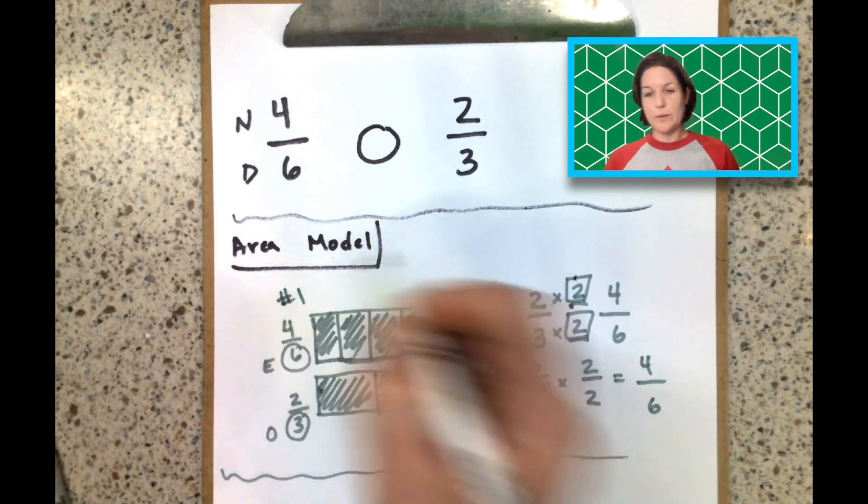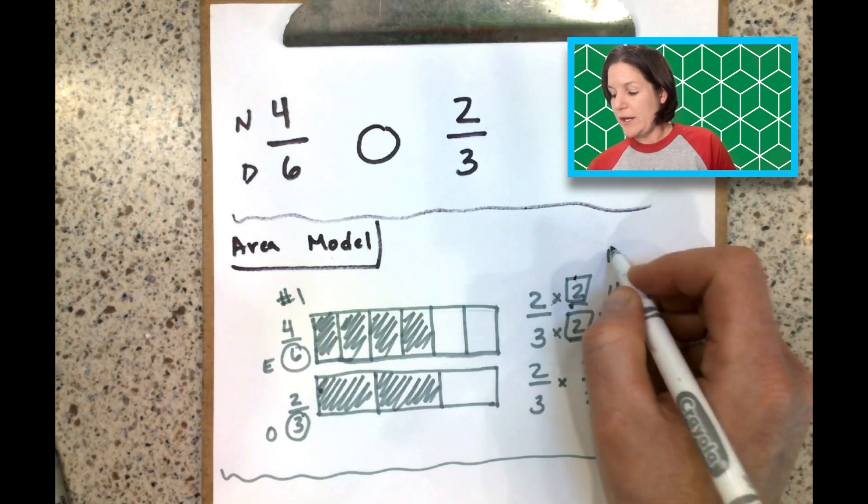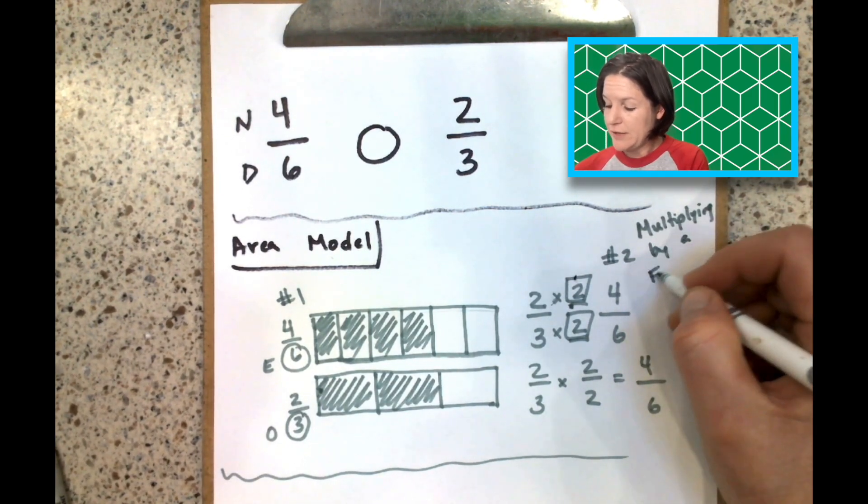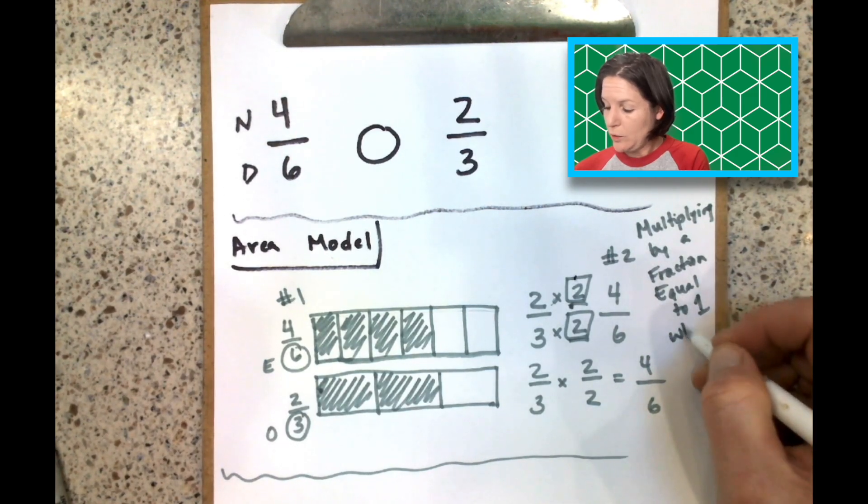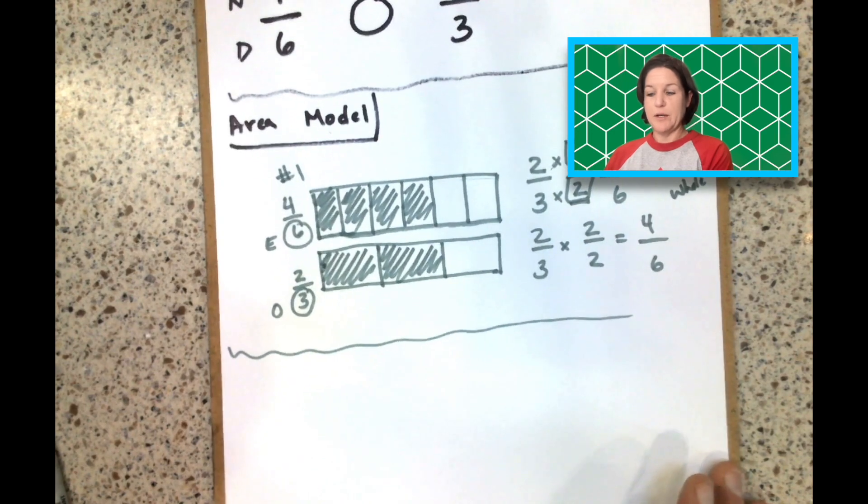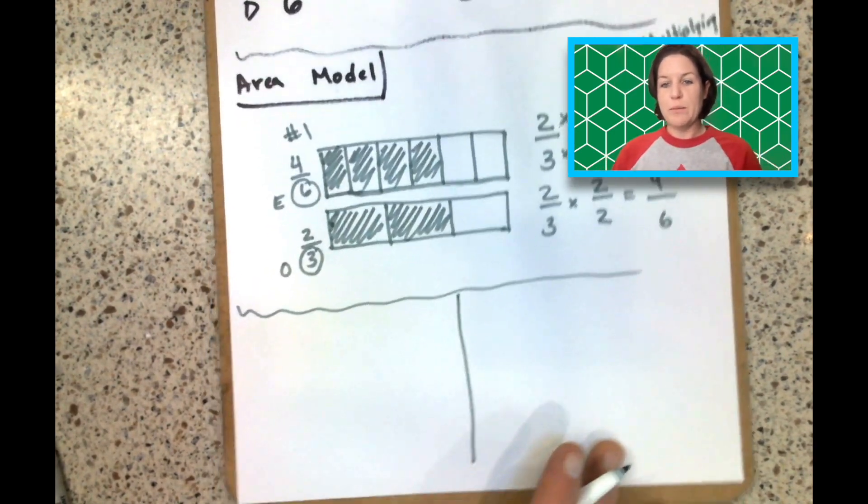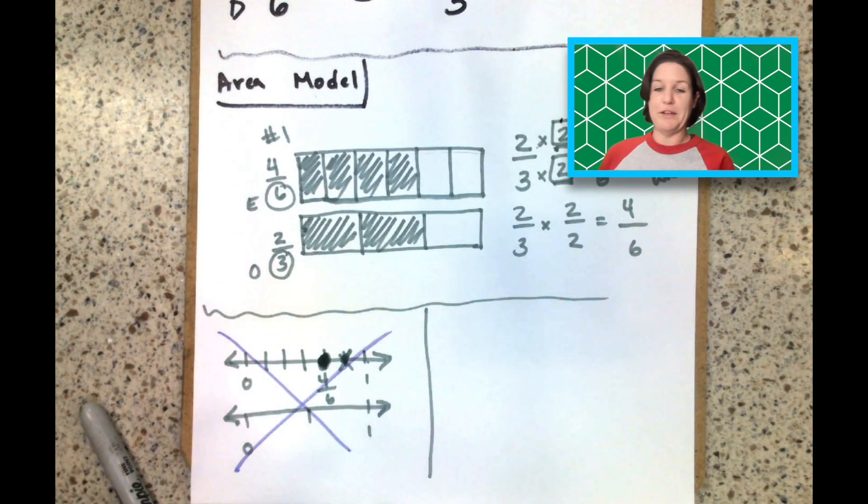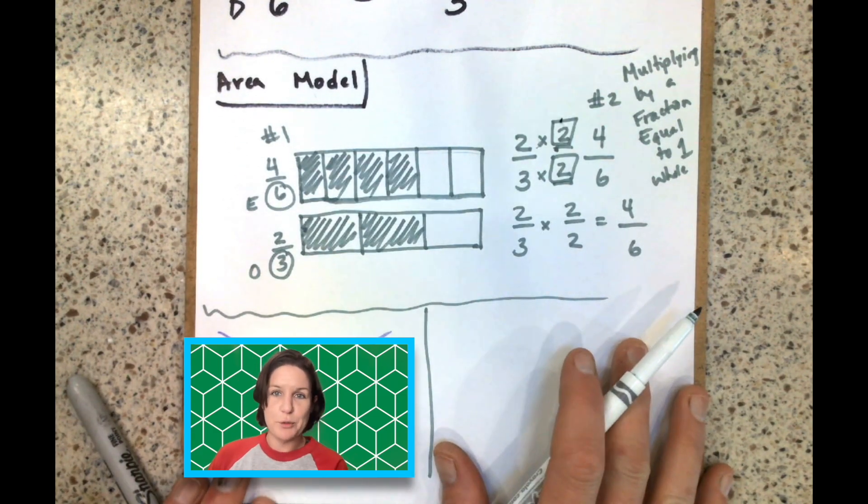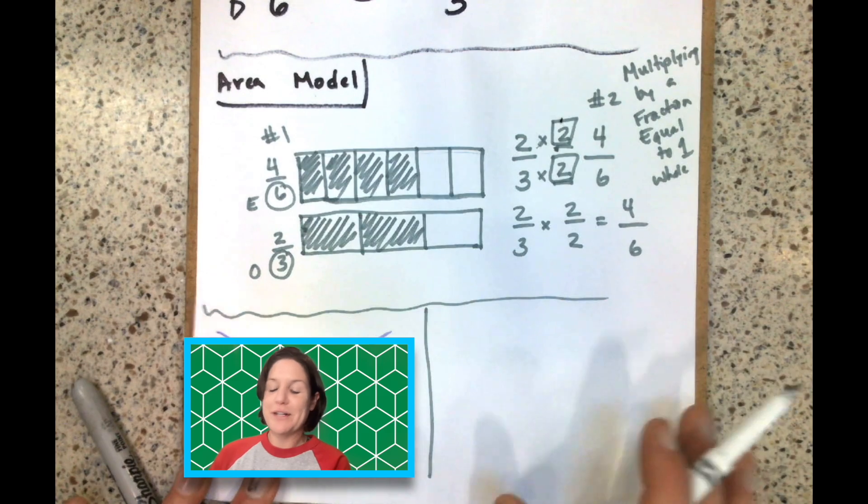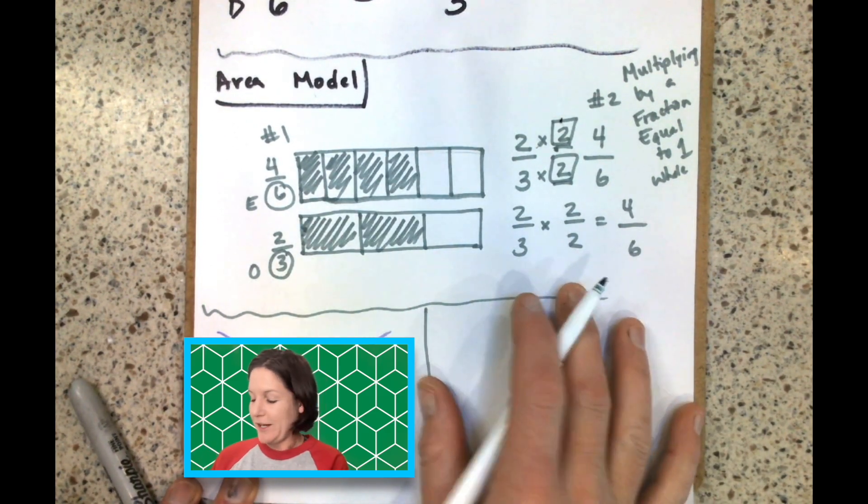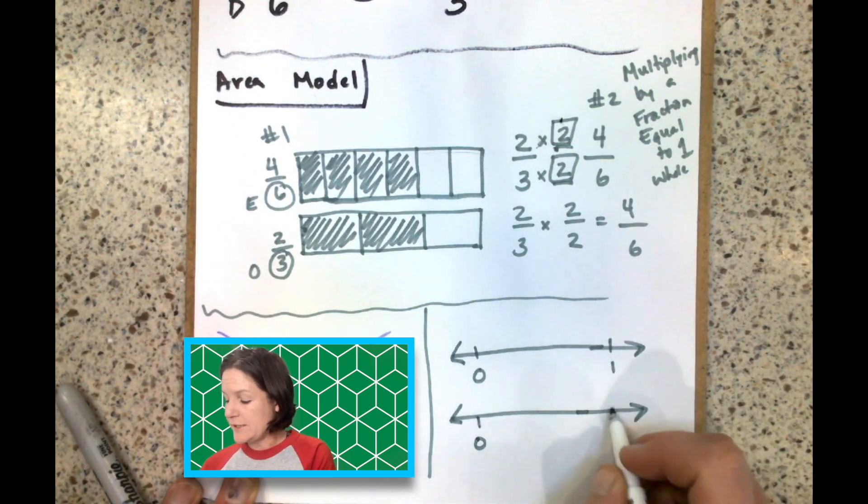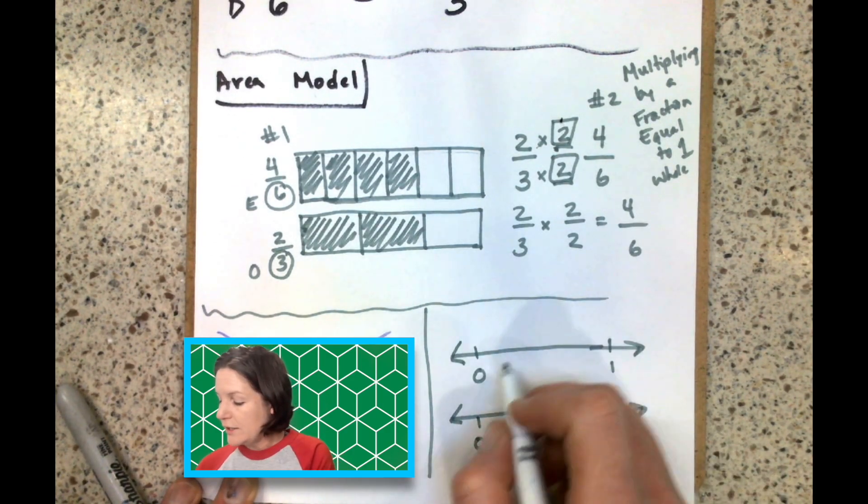So this is way number one, which is the area model. They looked really close. This is way number two, which is multiplying by a fraction equal to one whole. That's way number two. Let's go to way number three. Bring it right here. Way number three could be with a number line. So we're going to pretend like this didn't happen. I'm going to do it again over here. I'm sorry for the mess. Really, truly, I am. This is why I love working on a whiteboard because if I mess up, I can just erase it. But I'm working with paper today. So again, creating a number line, zero and one in the same distance down here because we're comparing two different fractions.